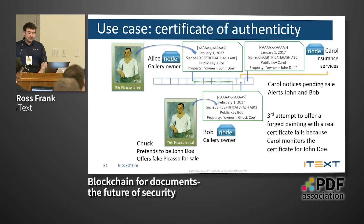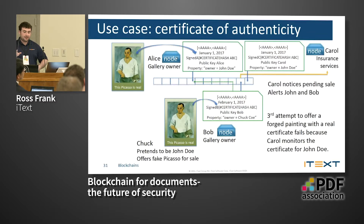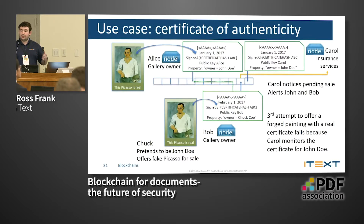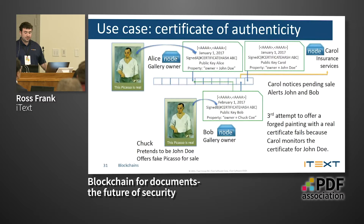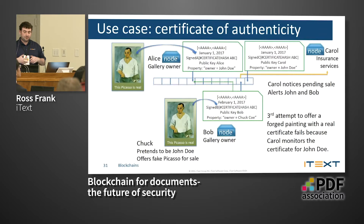Carol can jump in as an insurance service and verify the hash, the certificate, which it confirms. Carol is alerted about the pending sale along with John and Bob. If there's a forgery or something incorrect, Carol will monitor for that to make sure the certificate information is correct so she doesn't lose out on the money.